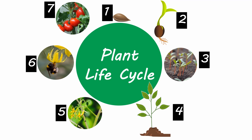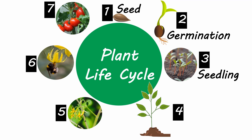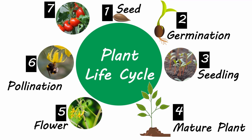Round two. There are seven numbers labeled on the screen. Let's start from number one and say out loud the name of the stage. Number one: seed. Number two: germination. Number three: seedling. Number four: mature plant. Number five: flower. Number six: pollination. Number seven: fruits.